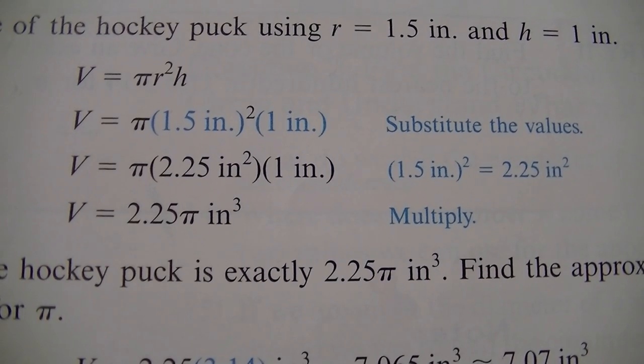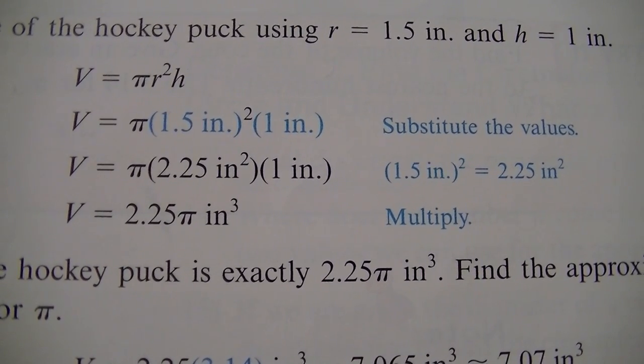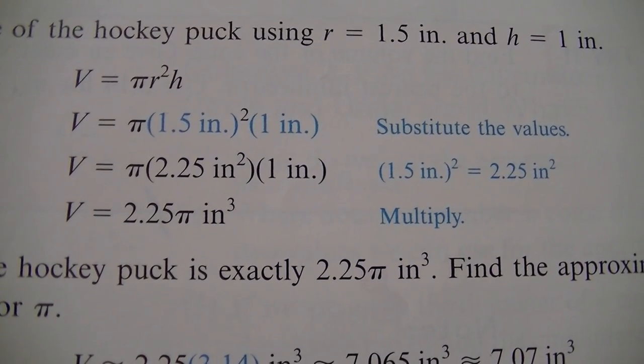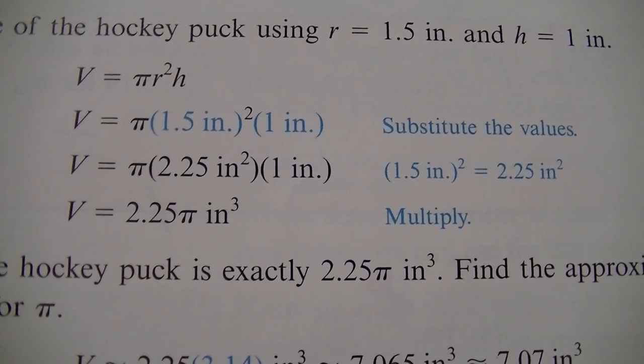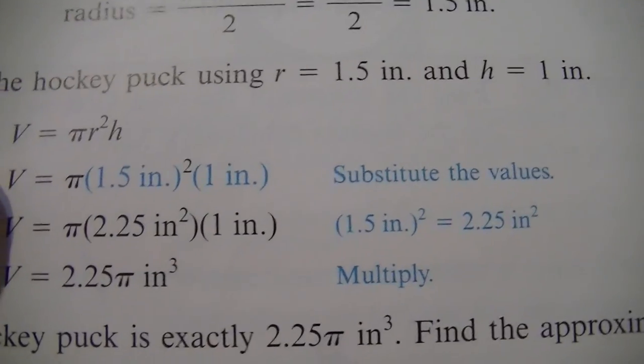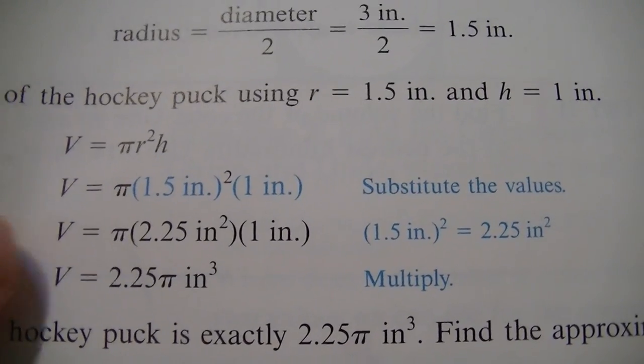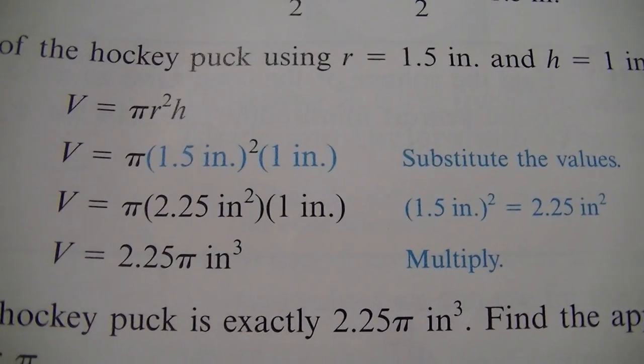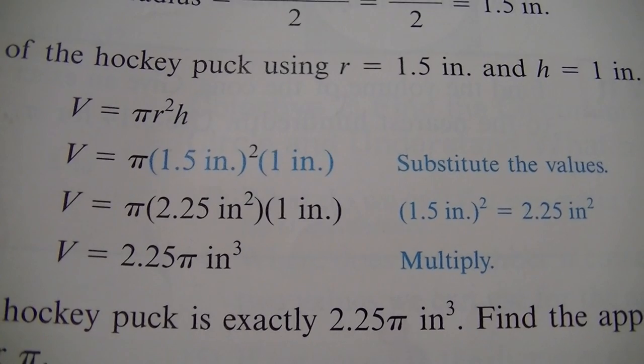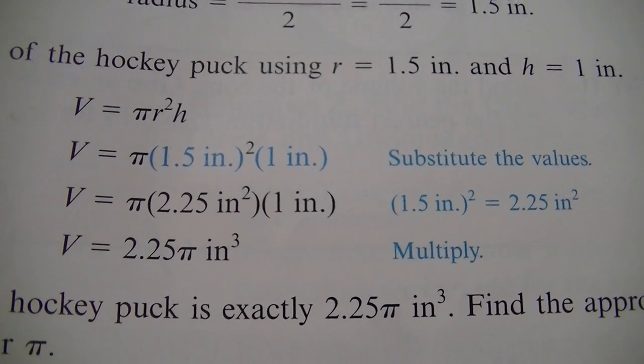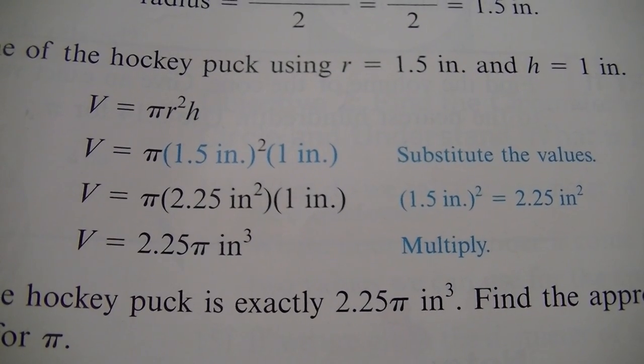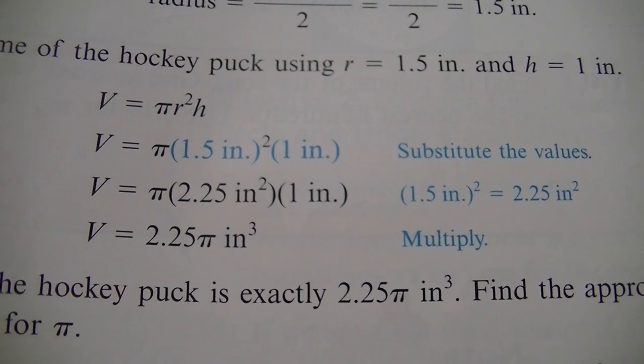All right. So our pi r squared times our height. Our r we said was 1.5. We're just going to plug that in there. And remember, we're going to square it. And then we're going to plug in our one in that second step here in the blue. And then in the next one down, we said we got to square it. So 1.5 times 1.5 is going to give us 2.25 inches squared. When we multiply it by one, that doesn't change anything; that 2.25 stays the same. But we still have to multiply it by pi.